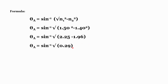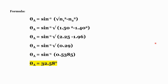Taking √0.29 gives 0.5385. So θa = sin⁻¹(0.5385). Doing the calculation, we get θa = 32.58°. Since it is an angle, the unit is degrees. This is how one may calculate the acceptance angle.